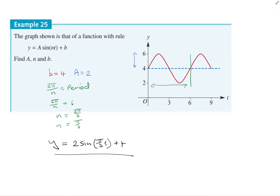So your equation becomes y equals 2 sin pi on 3 t plus 4. That's a horrible looking 4. I might just rewrite that one. There we go. That'll do it justice.